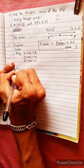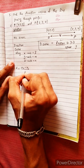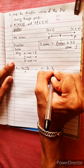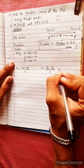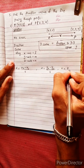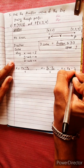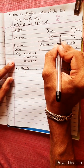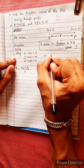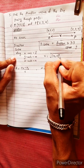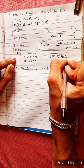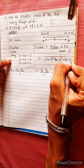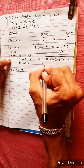L equals (x2 minus x1) divided by R. M equals (y2 minus y1) divided by R. N equals (z2 minus z1) divided by R. R equals the distance formula: square root of (x2 minus x1) squared plus (y2 minus y1) squared plus (z2 minus z1) squared.